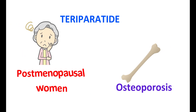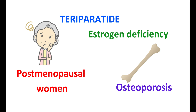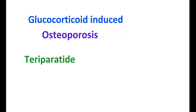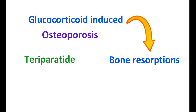Teriparatide can be used in the treatment of osteoporosis, particularly in postmenopausal women. In such women, estrogen deficiency reduces protection on the bones, leading to increased fracture risk. Teriparatide can also be used in glucocorticoid-induced osteoporosis. Glucocorticoids are steroidal medications used to control inflammation and immune response, but they increase bone resorption, leading to osteoporosis. In people with high fracture risk from glucocorticoids, teriparatide can be given — both in men and women.